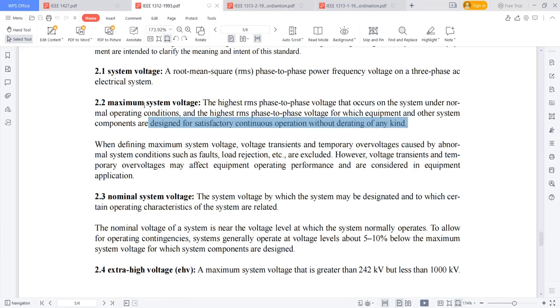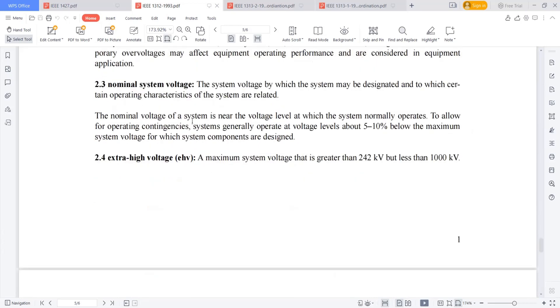The nominal system voltage is the system voltage by which the system may be designated and to which certain operating characteristics of systems are related. Generally, 5 to 10% of the nominal system voltage.